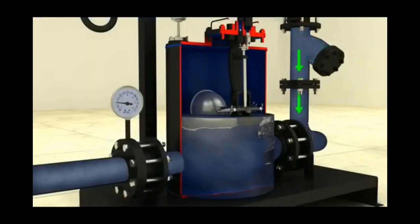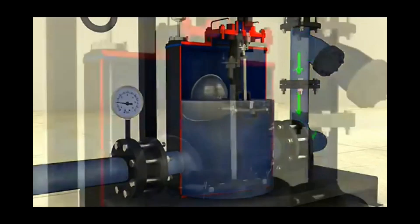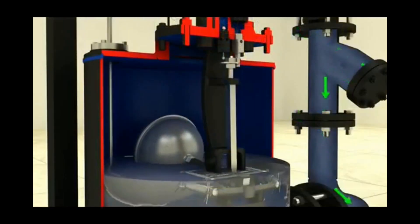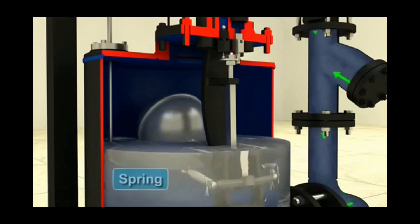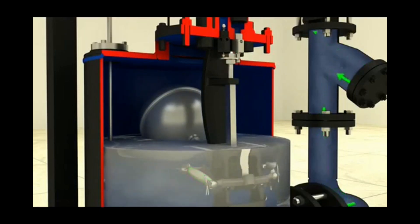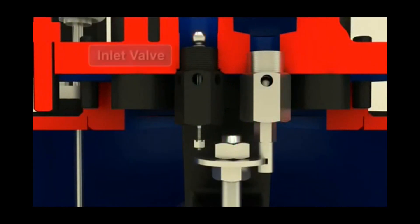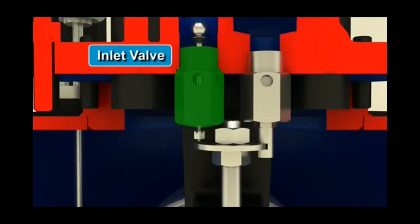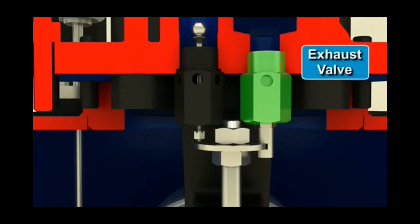When the float has risen to its upper tripping position, the linkage mechanism snaps upward over center. The energy in the springs is released as the push rod is moved upward to simultaneously open the motive steam inlet valve and close the exhaust valve.